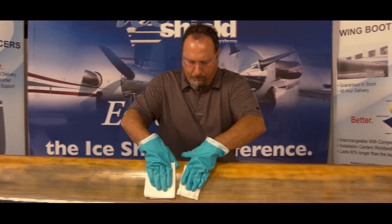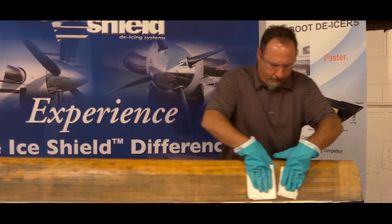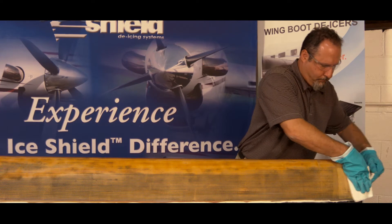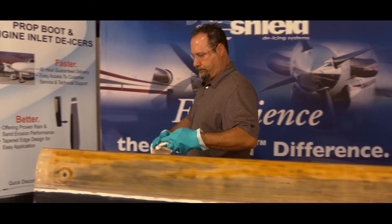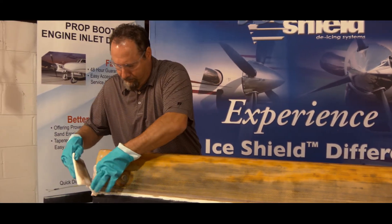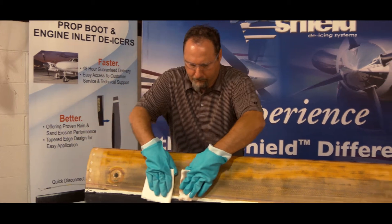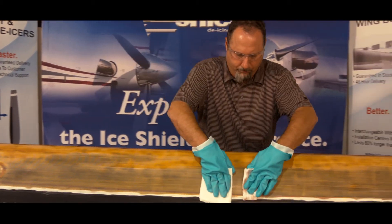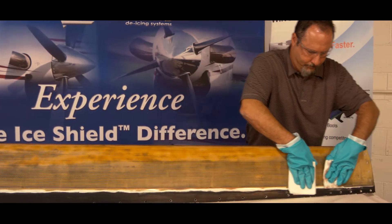Wearing toluene resistant gloves, use a clean, lint-free toluene dampened cloth to wipe the leading edge, following immediately with a lint-free dry cloth, removing any residue. Be sure not to remove the newly applied center line marking.